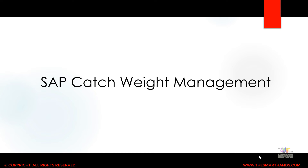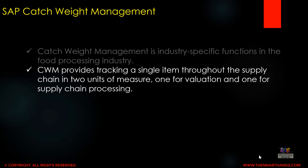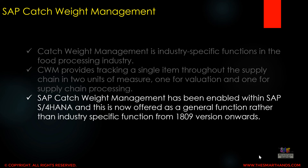Now we will discuss SAP Catch Weight Management. If you have never heard of SAP Catch Weight Management, let us briefly discuss what it means and how it is linked with S4HANA. Catch Weight Management is an industry-specific module in the food processing industry. It provides tracking of a single item throughout the supply chain in two different units of measure: one for valuation purposes and one for supply chain processing. SAP Catch Weight Management has been enabled within SAP S4HANA and is now offered as a general function rather than an industry-specific function from version 1809 onwards. Before 1809 it was industry-specific, but it has now been converted to general functionality within all on-premise systems.